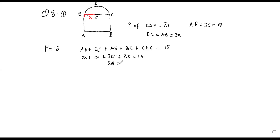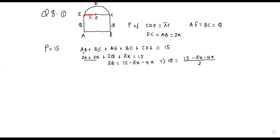So 2q = 15 − πx − 4x, and then these are gathered together. Meaning q = (15 − πx − 4x) / 2. So this is q, the height of the rectangle. And now how do we find the area? The area of the whole structure is going to be the area of the rectangle.